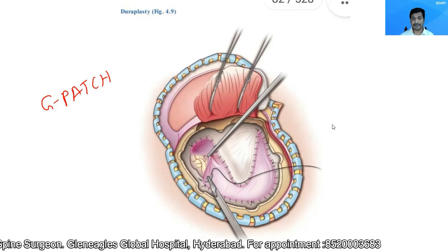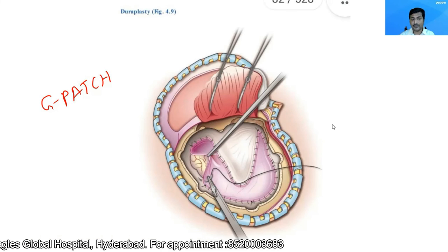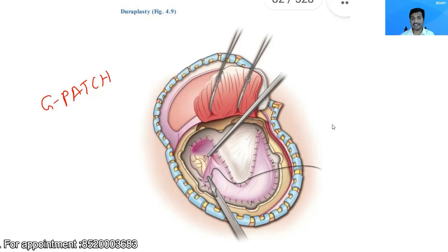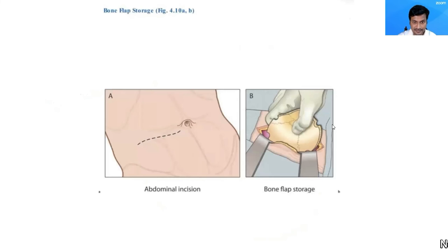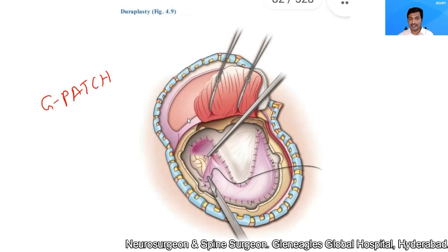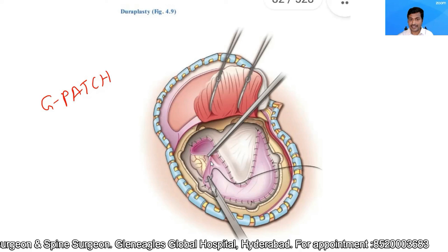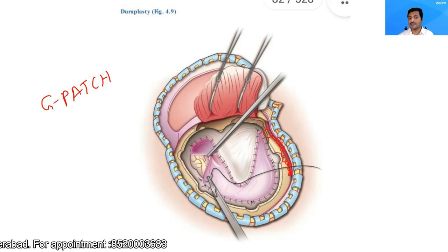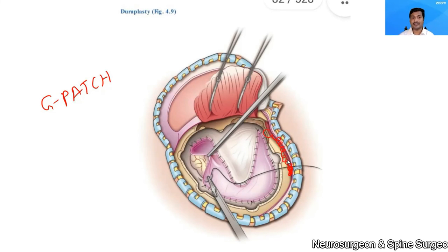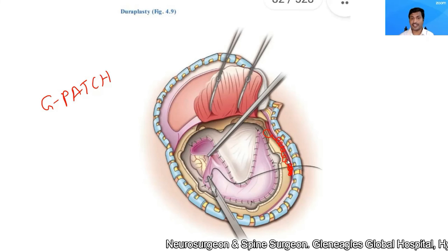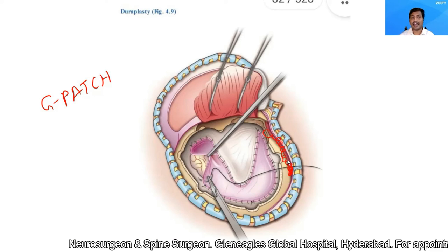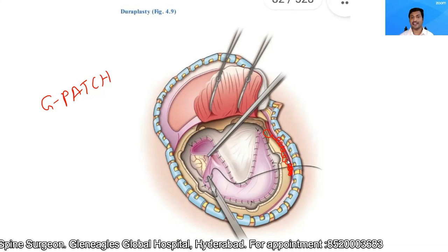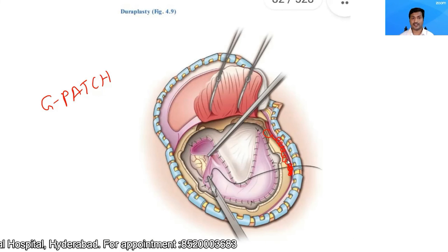Then I place the muscle and anchor it properly to the neighboring cuff of muscle, then place a closed drain without suction. Usually I place it without suction, and then we close the skin in layers. This completes the cranial part of decompressive craniectomy.